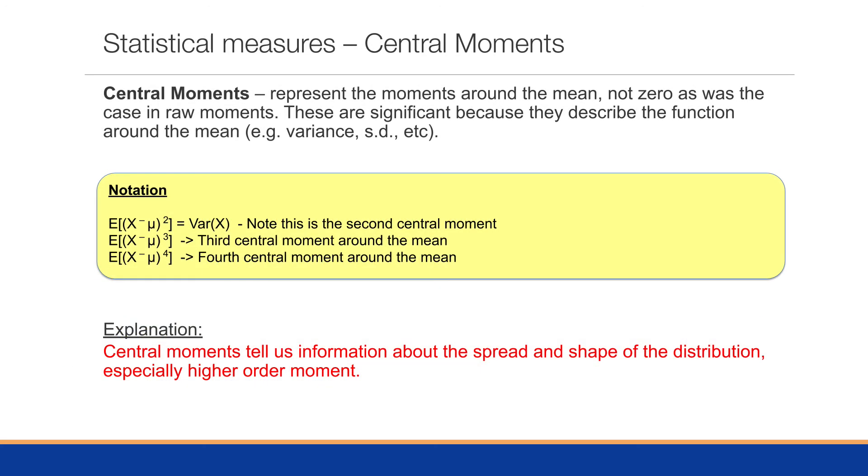Central moments represent the moments around the mean, not zero, as was the case of the raw moments. This is the key concept for us—these central moments. We want to know how things behave or what the shape of this data is around its center point or center of mass, which we'll represent as the mean.